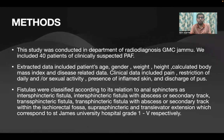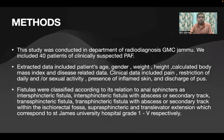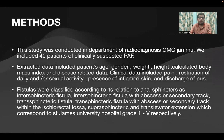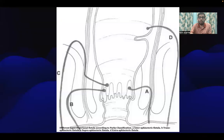Clinical data included pain, restriction of daily and/or sexual activity, presence of inflamed skin, and discharge of pus. Fistulas were classified according to their relationship to the anal sphincters as: intersphincteric fistula, intersphincteric fistula with abscess or secondary tract, transsphincteric fistula, transsphincteric fistula with abscess or secondary tract, within the ischiorectal fossa, suprasphincteric, and trans-elevator extension — corresponding to St. James's University Hospital rating grades 1 to 5 respectively.